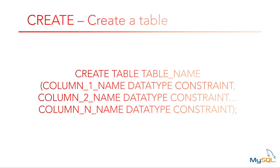To create a table using the create command, you type create table followed by the table name. You then open parenthesis and type each column followed by the data type you would like the column to be. This is mandatory, and then any constraints you would like the columns to have — this is optional. You do this for all of the columns, then close parenthesis and terminate with a semicolon.